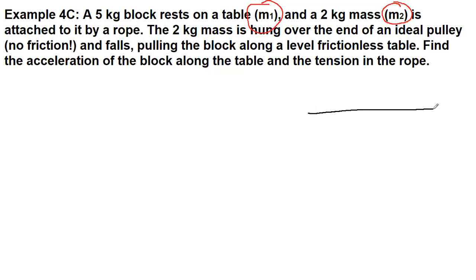So we have a table with a pulley, and our big mass here, mass 1, is 5 kilograms. It's the one that's on the table, and it's attached by a rope to mass 2, which is 2 kilograms, and is able to swing freely. There's no friction in this problem, either in the pulley, that's what we mean with ideal, or on the table, because we're told it's a frictionless table. What we're trying to do here is find the acceleration of the block and the tension in the rope. There are two unknowns here.